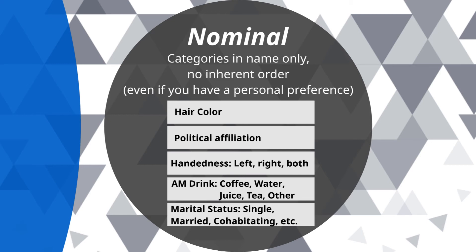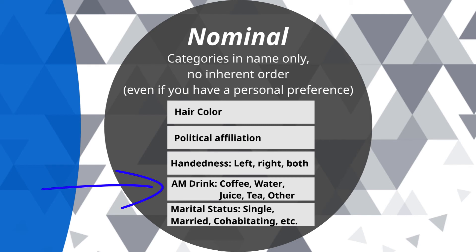Nominal variables are categories in name only — remember N for name only. There is no inherent order to the responses for nominal categories, even if you have a personal preference. For example, handedness: left hand or right hand is dichotomous, but since some people are ambidextrous, adding that option makes it nominal. Another example: what do you drink in the morning — coffee, water, juice, tea, or other. The 'other' option allows for exhaustive categories. Think carefully about the purpose of your question, collect data as specifically as possible, and you can always reorganize categories for analysis.